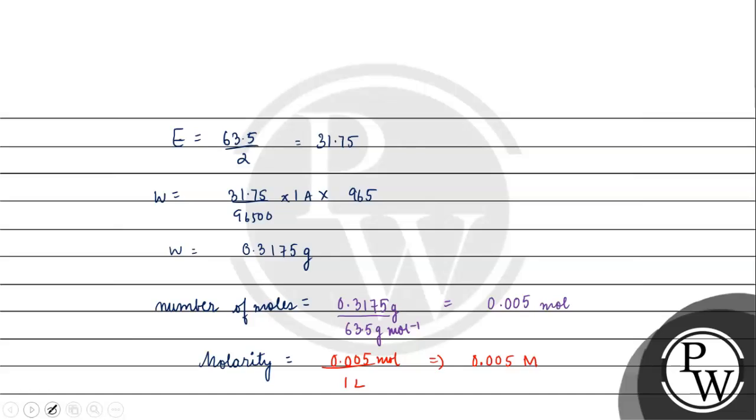If we talk about normality, what will come? Normality will be our molarity into n. Molarity is 0.005 molar, n is 2 for 2 electrons, so 2.